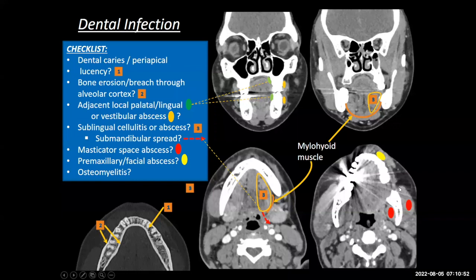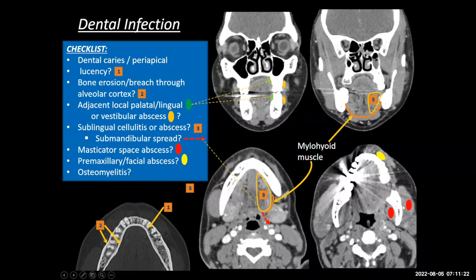The masticator space has a red oval in the masseter muscle, lateral and overlying the ramus of the mandible, and on the medial side is the medial pterygoid muscle deep to the ramus of the mandible. Molar infections, especially third molar infections, could potentially extend into the masticator space. Patients with masticator space infections may present with trismus and difficulty opening their jaw.